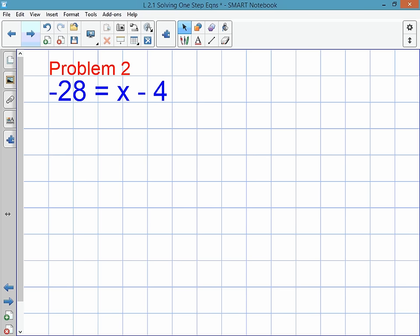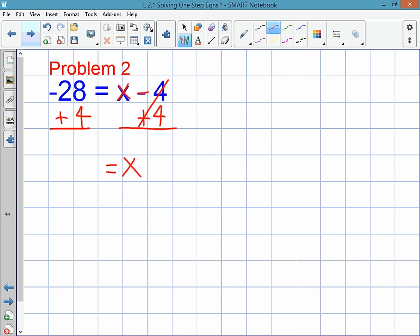Okay, problem 2 says negative 28 equals x minus 4. You are trying to solve for x, and there's a subtraction. So, you do the opposite, which is add, and you add 4, and what you do to one side, you do to the other side. Minus 4 and plus 4 are opposites. They cancel each other out. You're left with x. Negative 28 plus 4, as we talked about with adding integers, is negative 24.